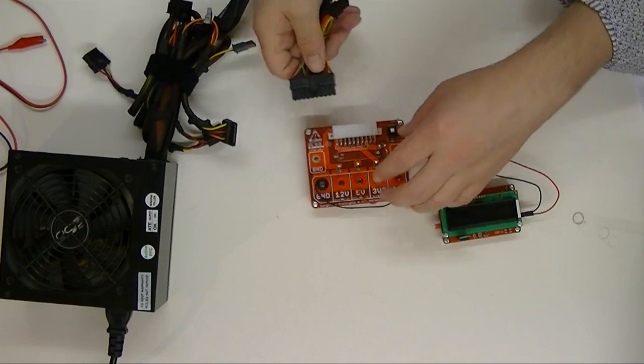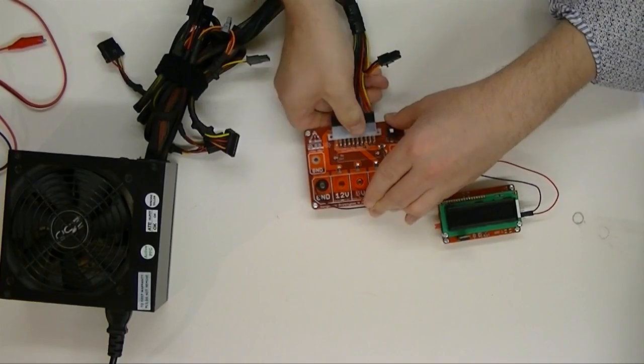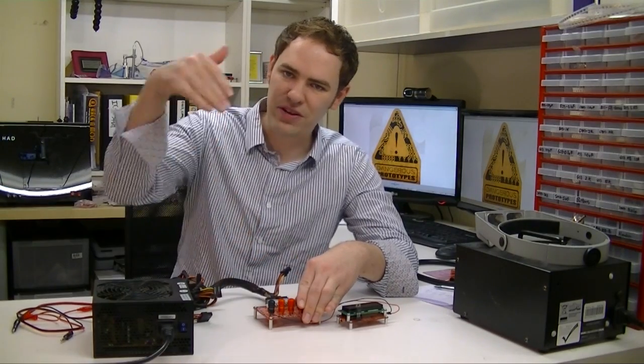So here's how it works. You connect the ATX connector from the power supply to the breakout board. It's a right angle connector so it comes out at an easy to deal with angle, it doesn't go straight down.